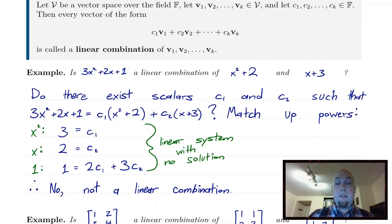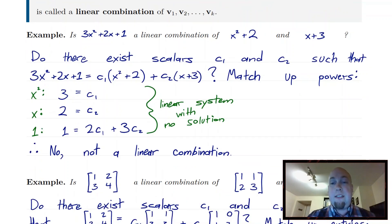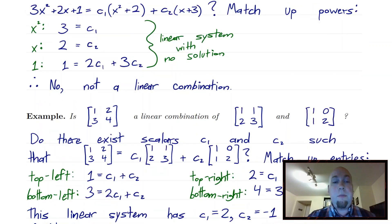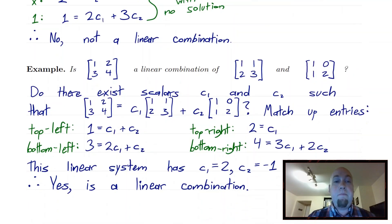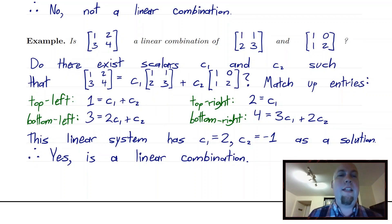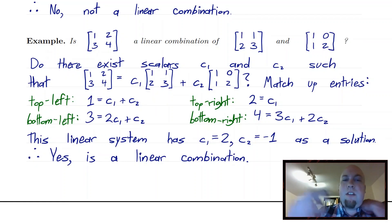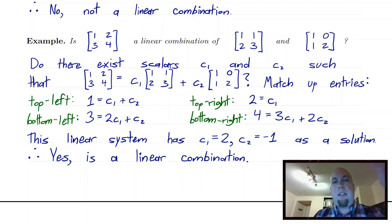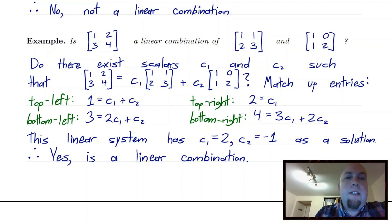So that's how it works for polynomials. Let's look at matrices. The basic setup is the same, but the details of the calculation are slightly different. Matrices form a vector space, so we can talk about linear combinations of them.